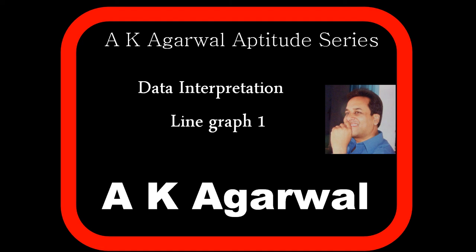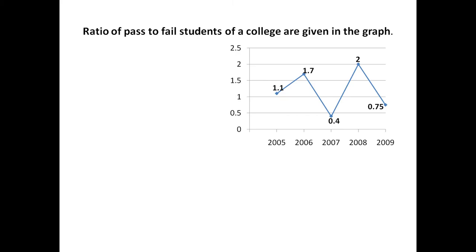Hello friends and welcome to AK Agarwal Aptitude Series. In this session we are going to learn a technique for solving a problem on a line graph. A line graph is given and based on this we have to answer certain questions. The given information is the ratio of pass to fail students of a college, shown for years 2005, 2006, 2007, 2008, and 2009.